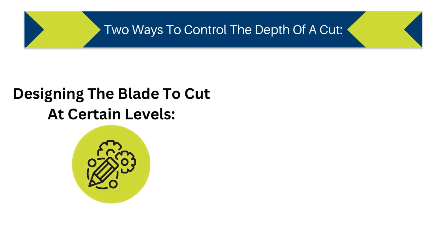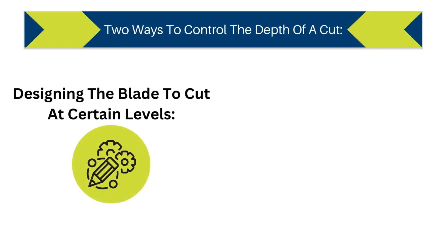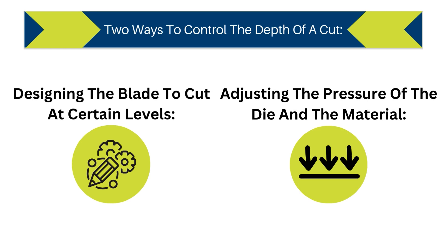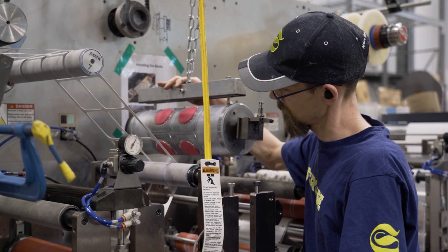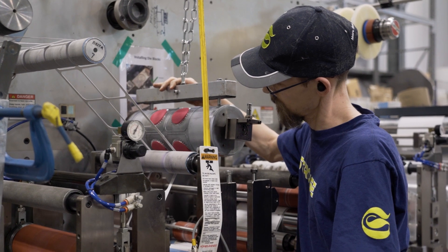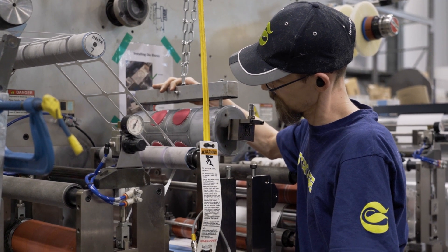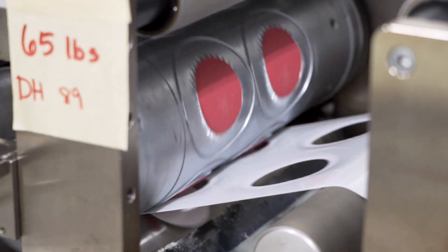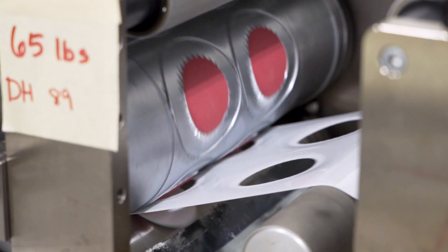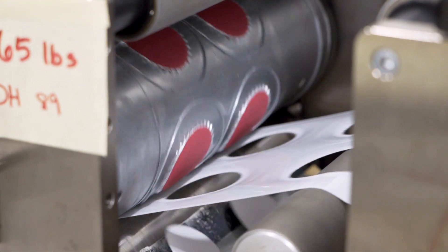You can control the depth of your cutting by one of two methods: designing the blades to cut to different levels, or adjusting the pressure between the die and the material underneath. Depending on the pressure settings, the die's sharp edges can penetrate to a specific depth, allowing for precise control of the cutting process.